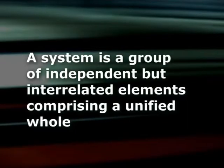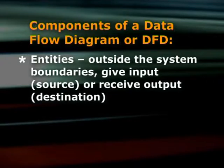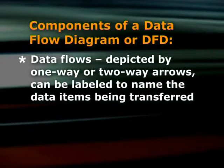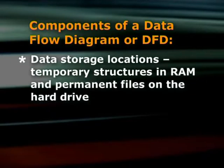The program you are going to write will be a system. A system is a group of independent but interrelated elements comprising a unified whole. Every system has system boundaries. The elements of your system are inside these boundaries. All DFDs have four components: the entity which gives input is the source, the entity which receives output is the destination, processes - events that occur in the system that receive input and deliver output, data flows shown by one-way or two-way arrows which can be labeled to name the data items being transferred, and data storage locations - the temporary structures in RAM and permanent files on the hard drive.